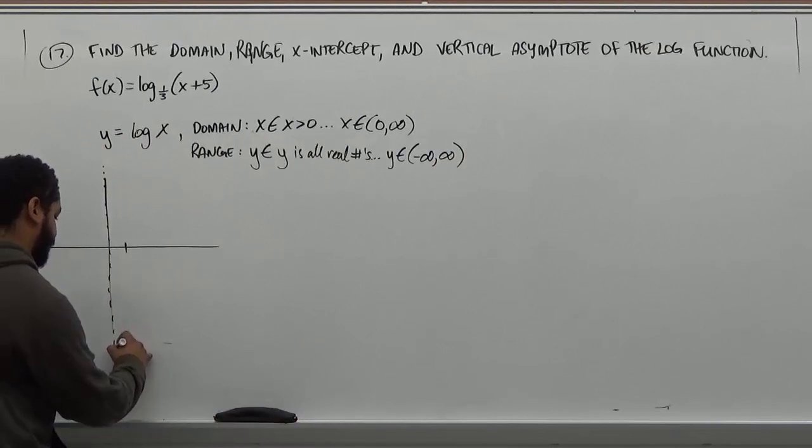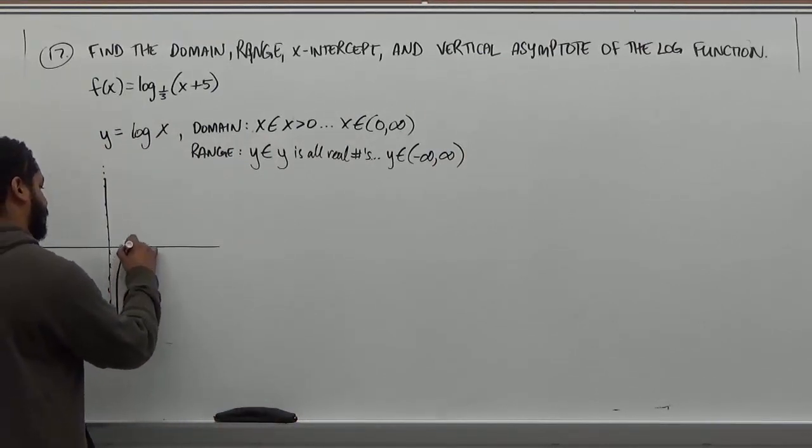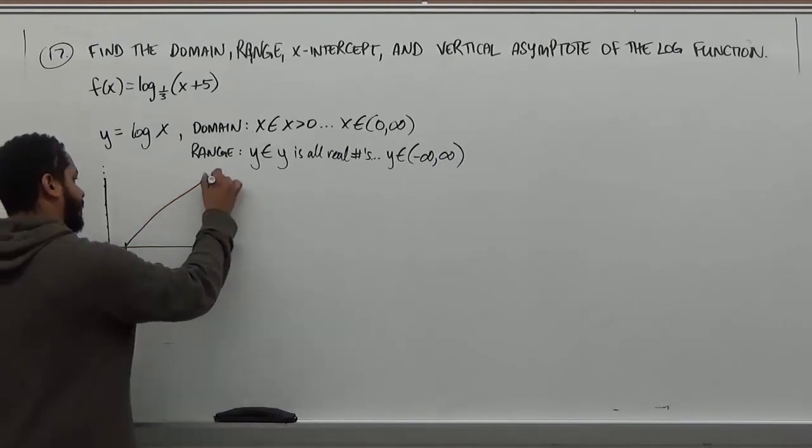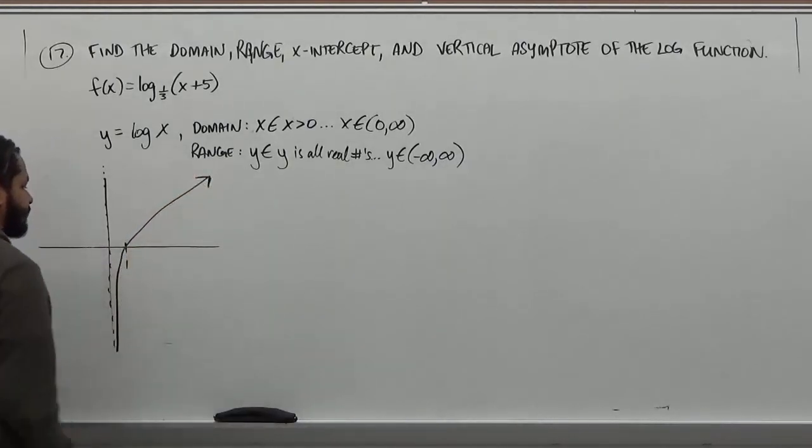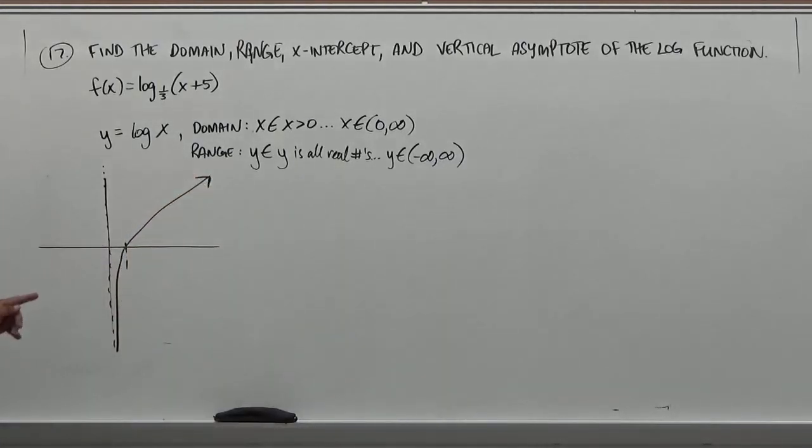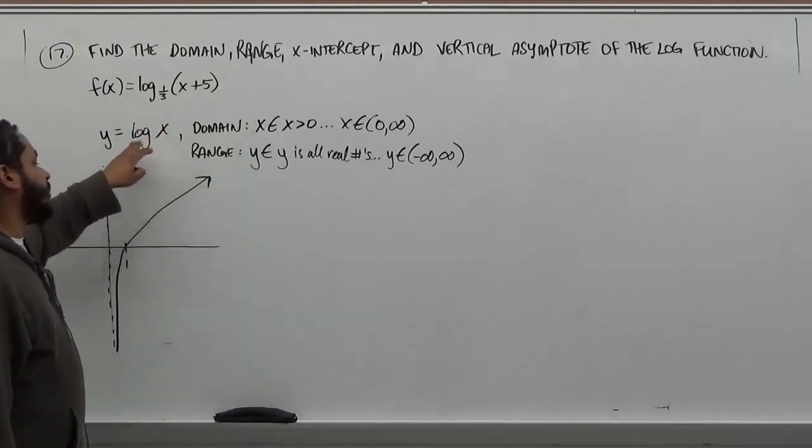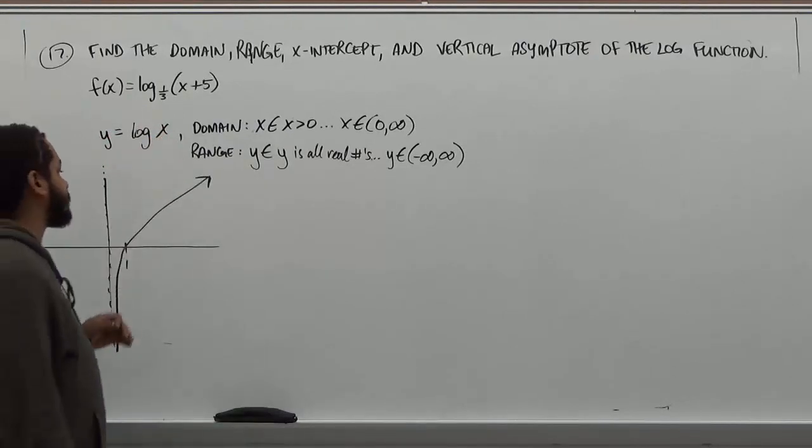And what happens in this function is, from the vertical asymptote, this continues to go up, crosses that zero here when x is one, and goes up to infinity. And every time you get a value of one going into your logarithmic function, the log of any one is always equivalent to zero.